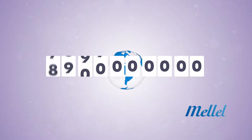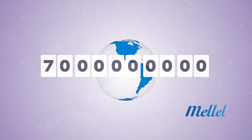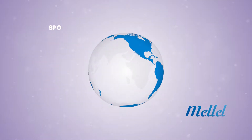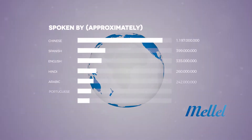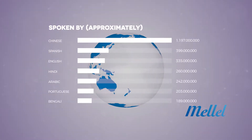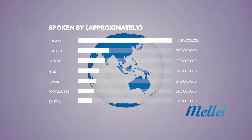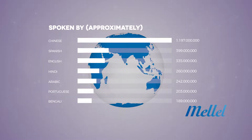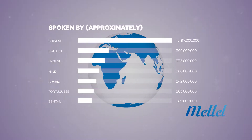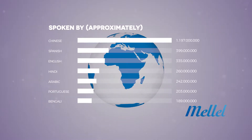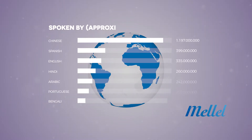There are 7 billion people who live on this planet. Only 500 million of them are English speakers. So why does the entire world have to work with technology that was made to support one language, English?